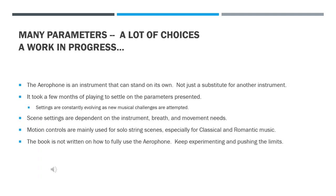There are many parameters and choices when it comes to controlling vibrato on the Aerophone. For me, it's a constant work in progress, but the Aerophone can truly stand on its own merits — not just as a substitute for another instrument. It took me a few months and playing different pieces of music to settle on the parameters selected here. I leave my early Aerophone videos up to document my journey through the instrument settings, both good and not so good. Remember, scene settings depend on the instrument, breath, and movement needs, and motion controls are mainly used for solo string scenes, especially in classical and romantic music.